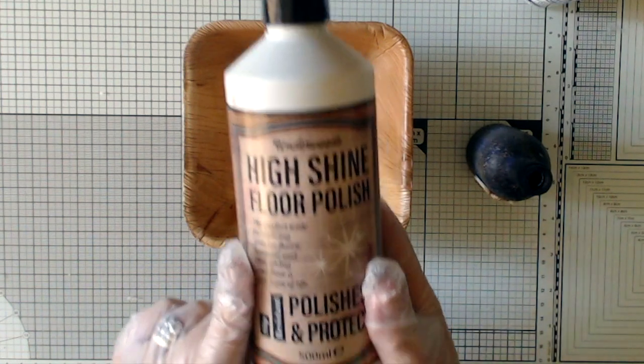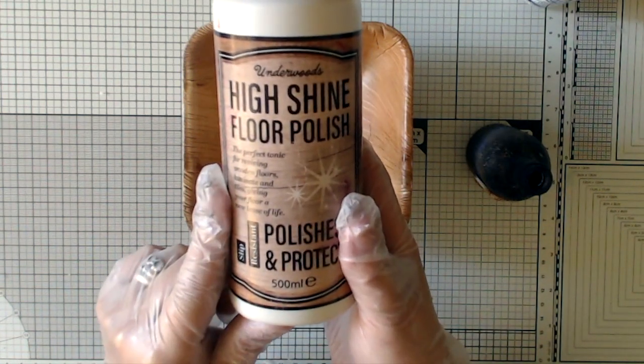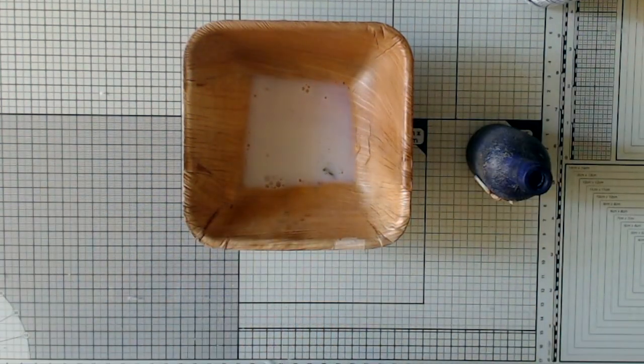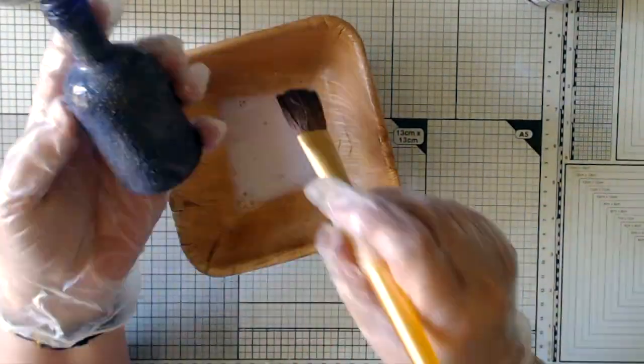To protect the surface and to add shine, I gave it a coat of clear acrylic floor polish. This particular kind I got from Amazon. Pledge Clear Multi-Surface Wax is another good option if you can't get hold of the one that I used.